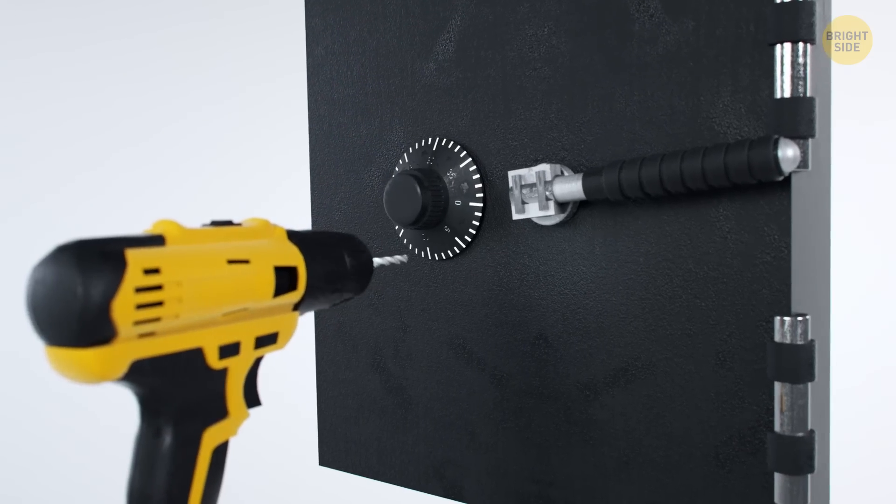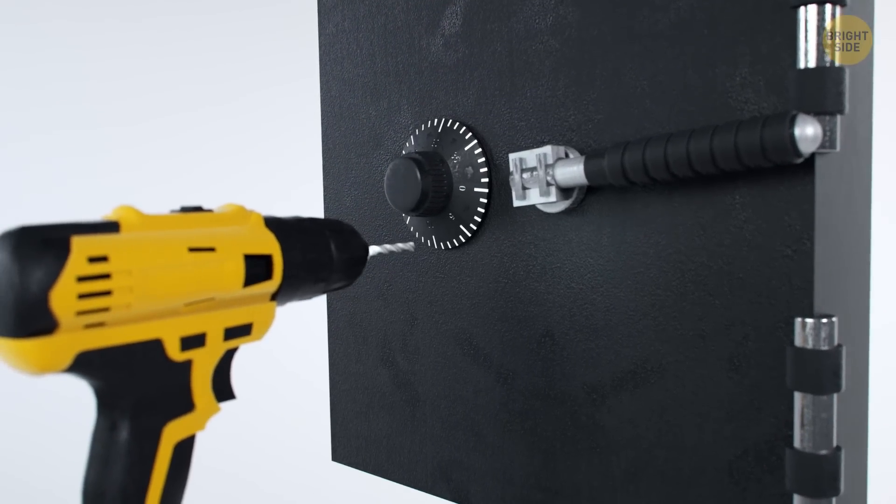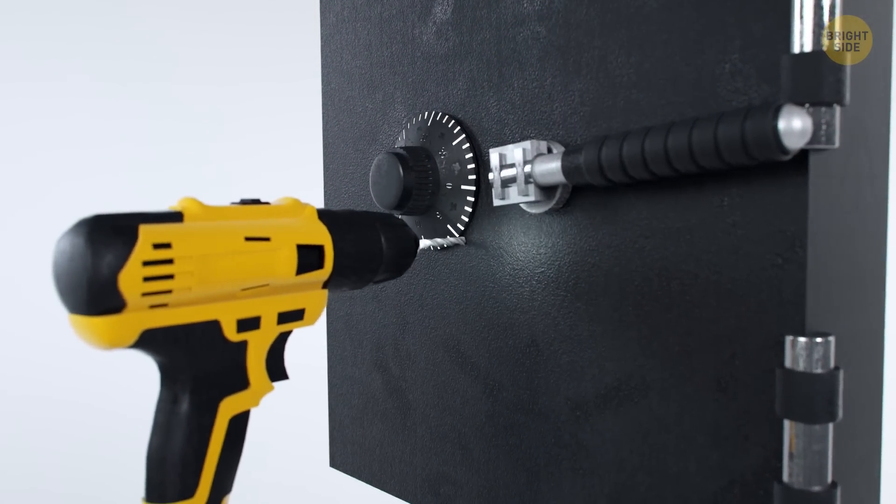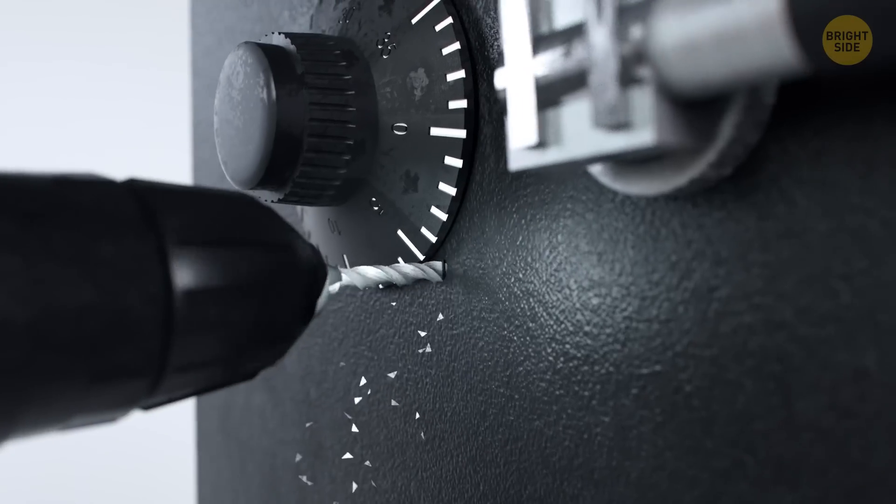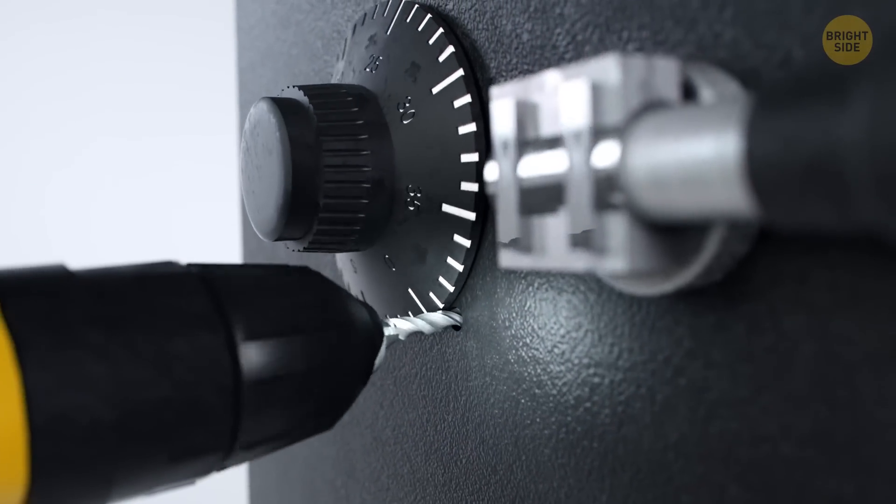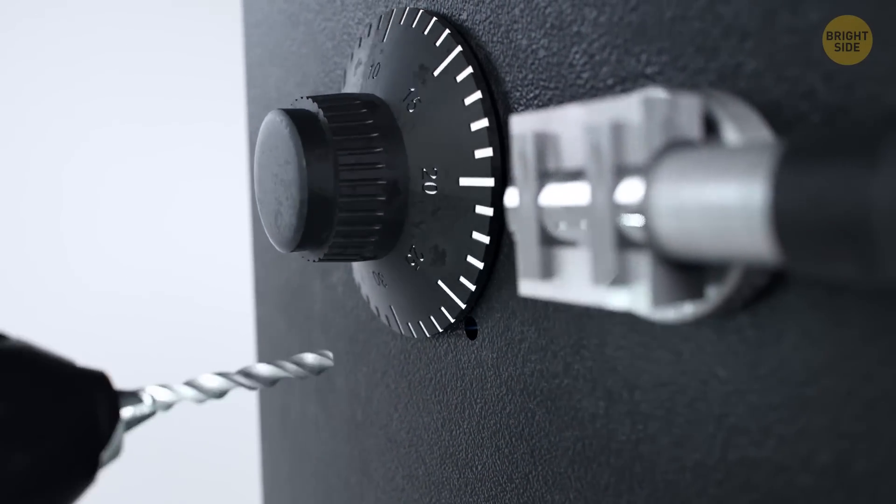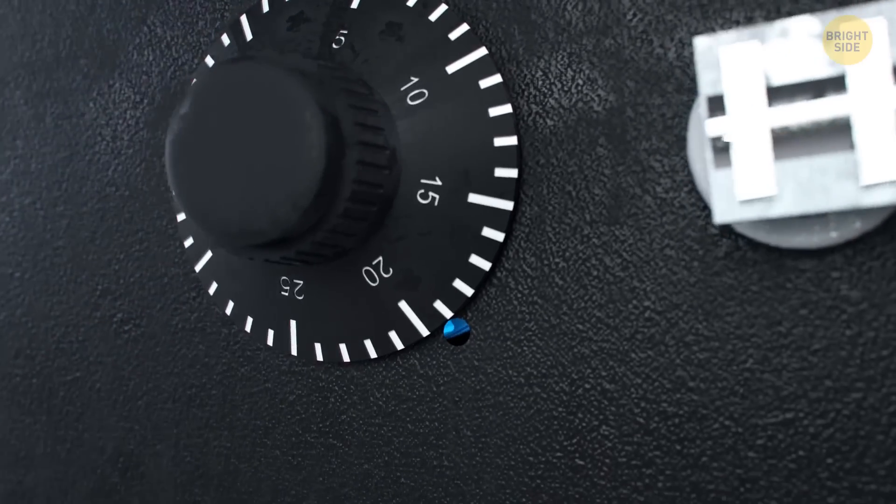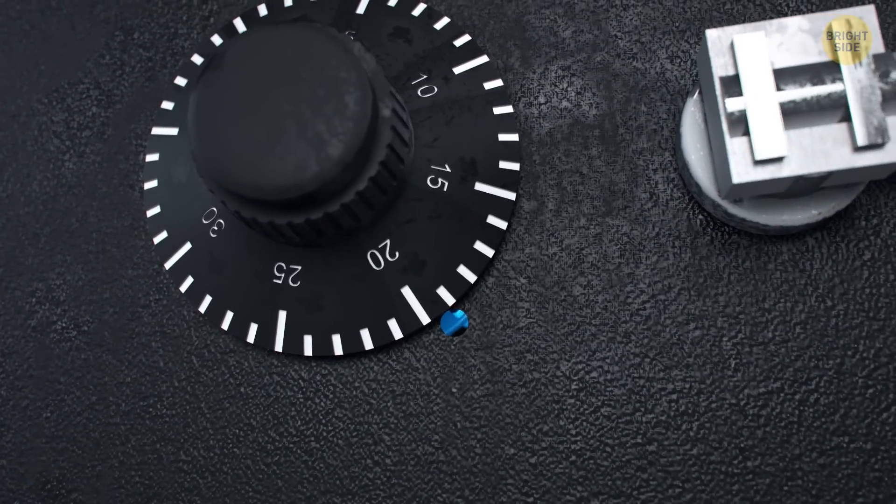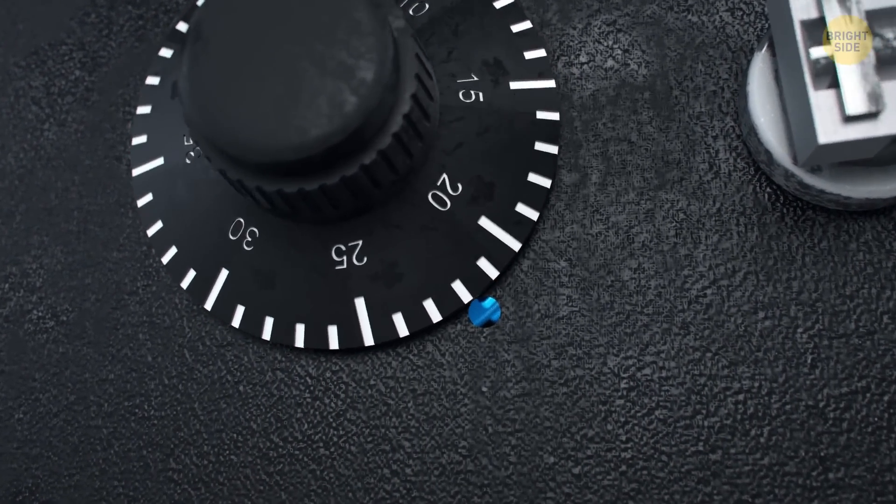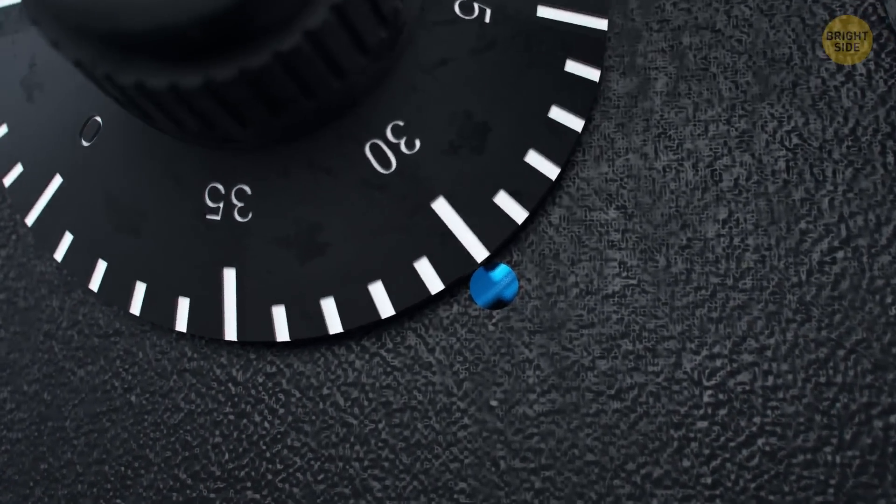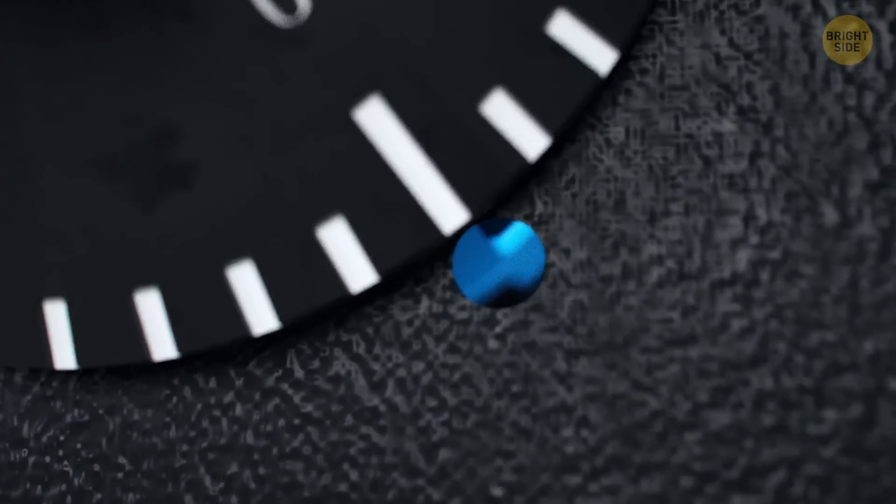To open such a lock without knowing the combination, you'll need a drill and a small camera. First, you have to know exactly where the door's combination mechanism is and drill a hole right in front of the notches on the discs. Now you stick your little camera with the flashlight in there. We can see the discs spinning on the screen. We have to turn the dial until you see that the first disc is in the right position, then the second, and the third.